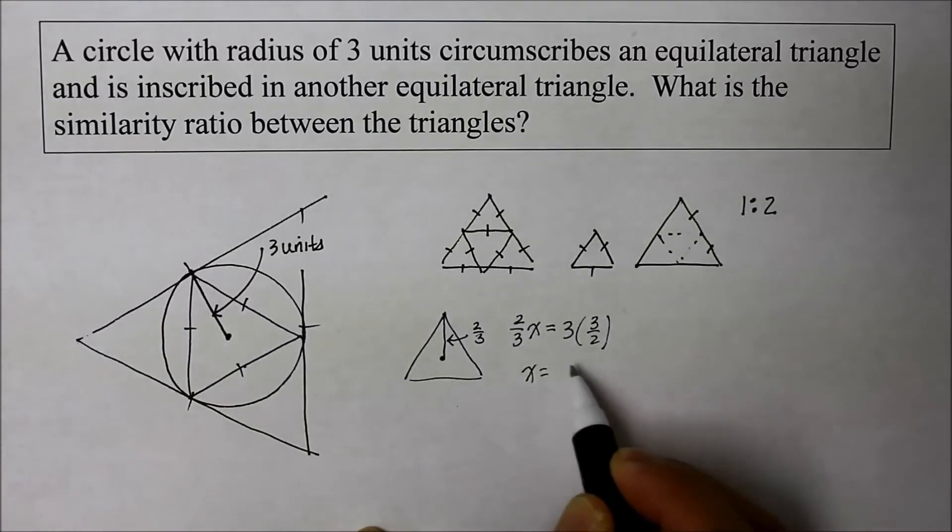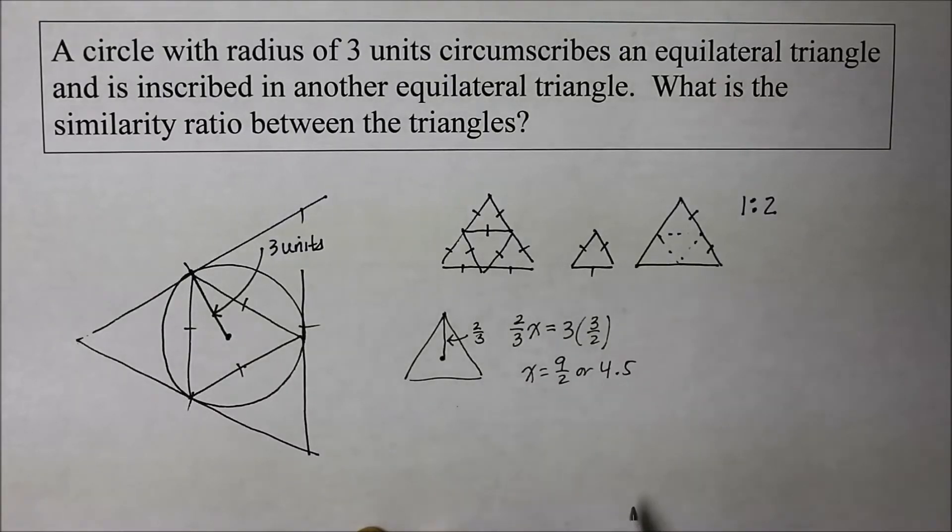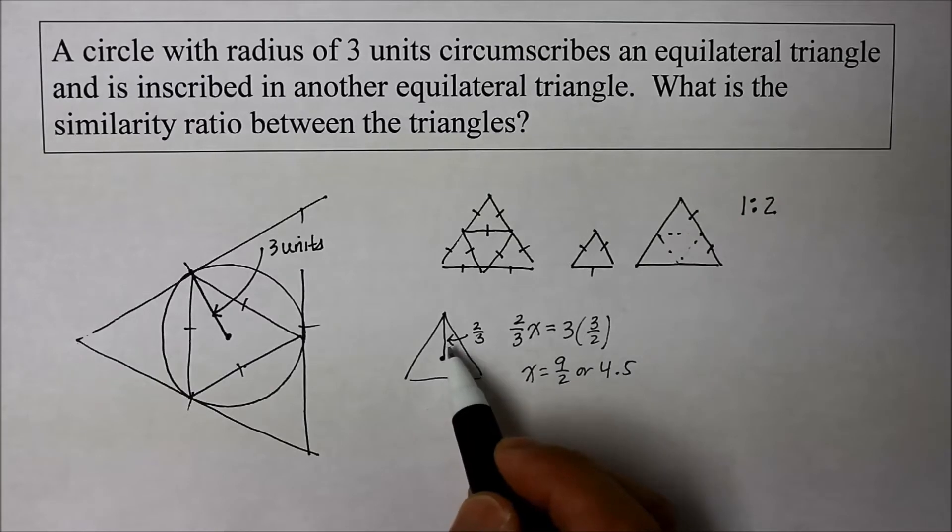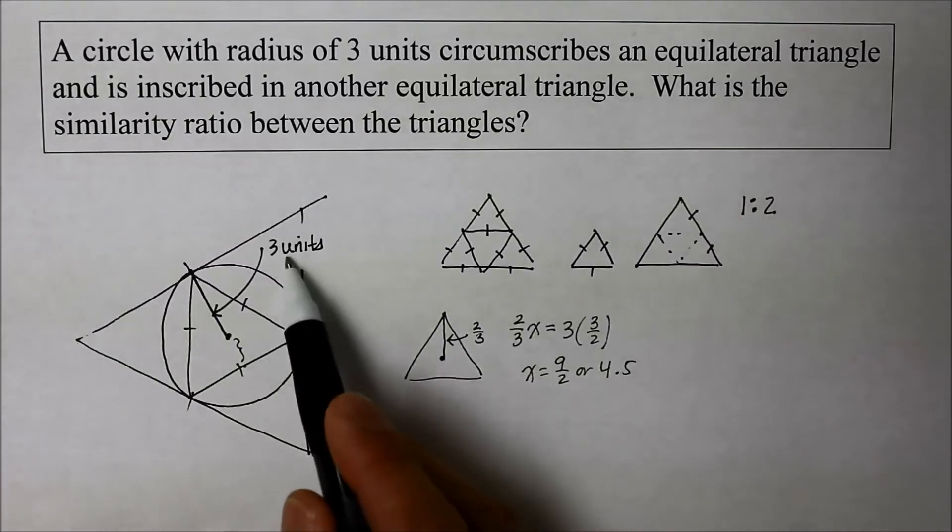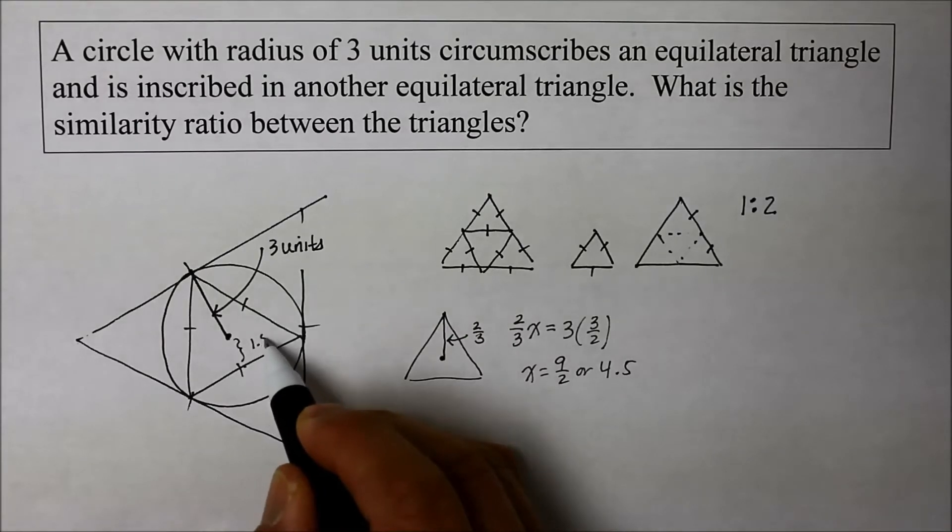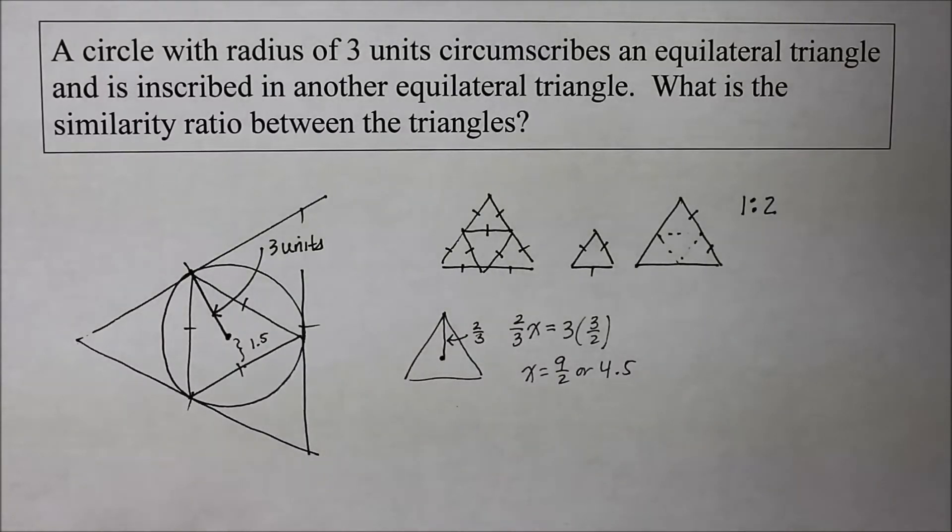So the x equals nine over two, or four point five. So if this is three, then the little one over here, four point five minus three, this is going to be one point five. All right, that's nice.